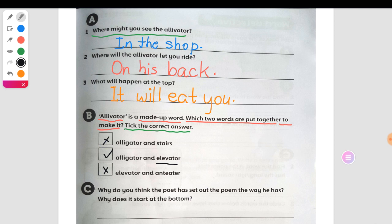It's question C. Why do you think the poet has set out the poem the way he has? Why does it start at the bottom? I need you. It's not a classwork. It's homework. Let's erase it. We have this as your homework.